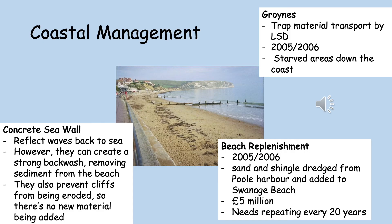The second type of coastal management is groynes — wooden barriers stretching out at a 90-degree angle. They work by trapping material transported by longshore drift, which increases the width of the beach. These were built in 2005 and 2006. One criticism of groynes is that they have starved areas of sediment and sand further down the coastline. The final type is beach replenishment, also carried out in 2005 and 2006: sand and shingle was dredged from Poole Harbour to the east and directly added to the beach to make it wider and taller, adding more protection for the coastline.